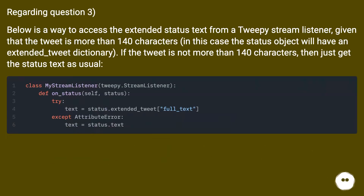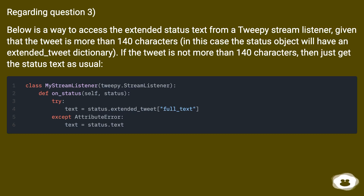Regarding question 3: below is a way to access the extended status text from a Tweepy stream listener, given that the tweet is more than 140 characters. In this case the status object will have an extended_tweet dictionary. If the tweet is not more than 140 characters, then just get the status text as usual.